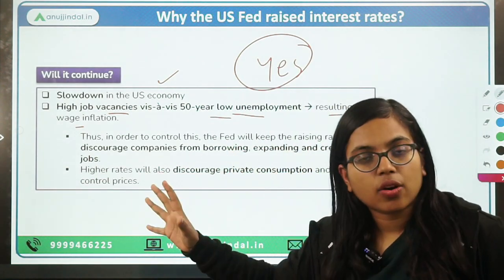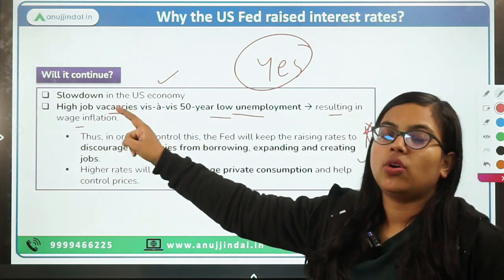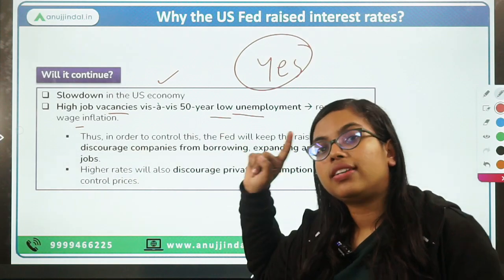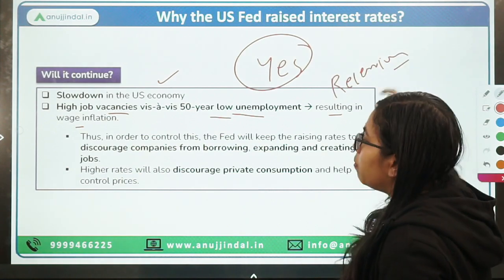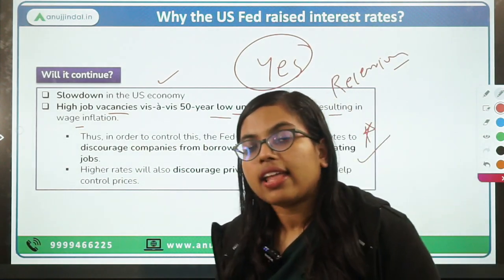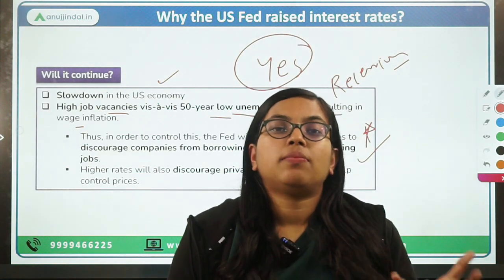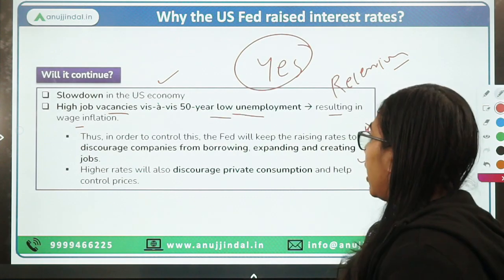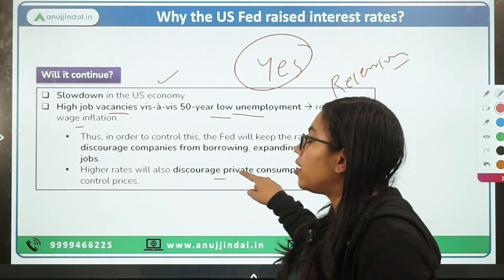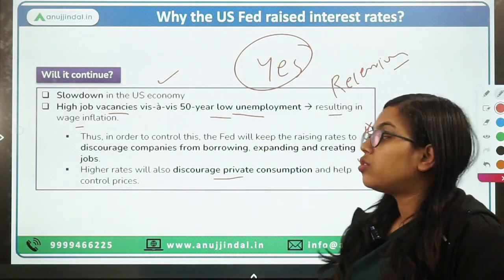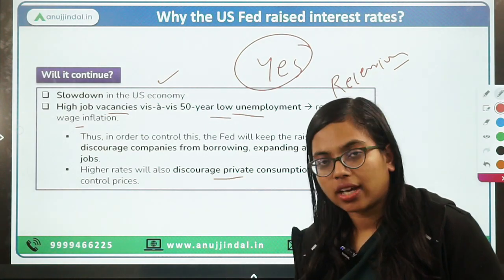But you will see a contradiction here. If corporates do not take loans, then there will be a risk to the economy's recovery, and that will result in a recessionary situation in the US economy. So in both ways, the US Fed needs to maintain a balance between having stable growth as well as stable inflation. Apart from that, this will also result in discouraging private consumption so that prices could be kept in check and inflation could be brought down.